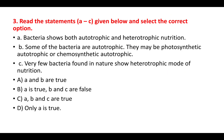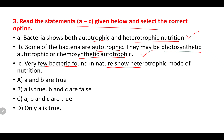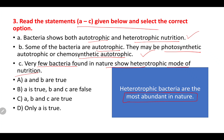Third question: read statements A to C and select the correct option. Statement A — bacteria show both autotrophic and heterotrophic nutrition — is true. Statement B — some bacteria are autotrophic, either photosynthetic autotrophic or chemosynthetic autotrophic — is also true. Statement C — very few bacteria in nature show heterotrophic mode of nutrition — is false, because heterotrophic bacteria are the most abundant bacteria in nature. So both A and B are correct; option A is the right answer.